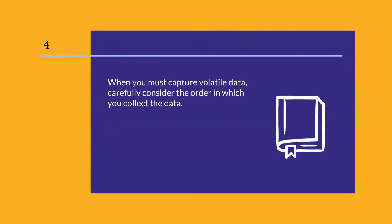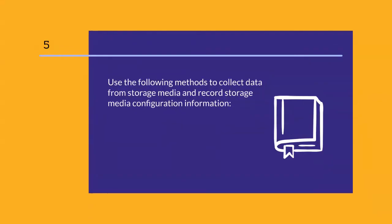When you must capture volatile data, carefully consider the order in which you collect the data, as volatile evidence can be easily destroyed. Information such as running processes, data loaded into memory, routing tables, and temporary files can be lost forever when a computer is shut down. Use the following methods to collect data from storage media and record storage media configuration information.